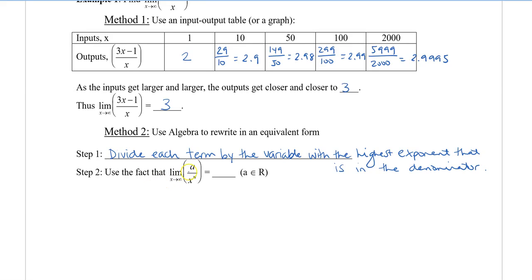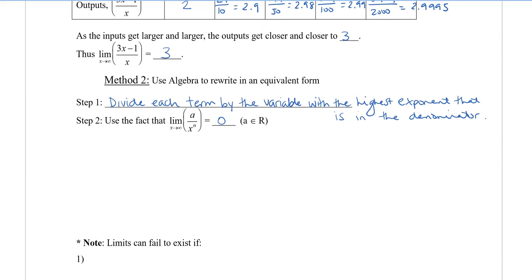We also have to use the fact that a divided by x to the n, as x gets bigger and bigger, where a is a constant number, then since x is getting so big in the denominator, we are going to be approaching 0. Let's use the same example to show you how this works. My denominator in the bottom, it says divide each term by the variable with the highest exponent that is in the denominator. We're going to divide the numerator and denominator by x.